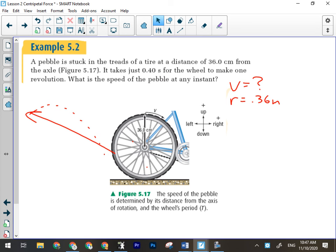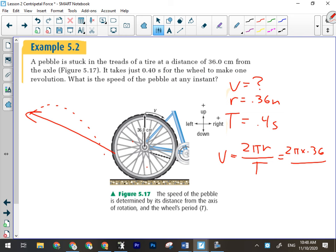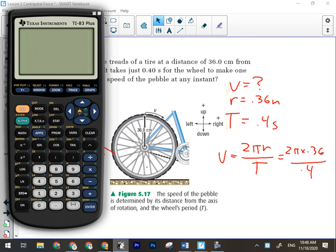What else did they give me in this question? Time. What time specifically? What do we call the time for one revolution? Period. They gave me a period. So I know big T, period, and it's 0.4 seconds. Can I find V if I have R and T? This is a formula we learned about the first day of this unit. V equals 2πR, the circumference of the circle or the distance traveled, divided by the period. So when we plug all this in, we've got 2 times π times 0.36 divided by 0.4.